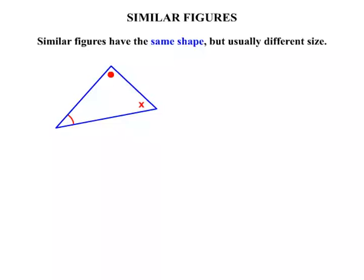If you consider this shape here, it's a triangle. The three angles are marked. The second triangle, same three angles marked. So that means it has the same shape, but obviously the second one is a little bit bigger.